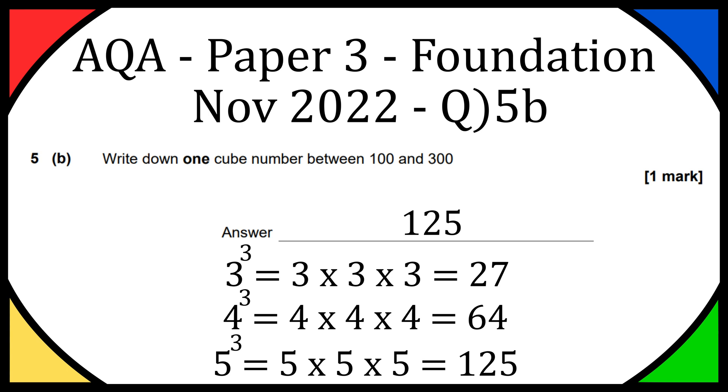You could have also had 6 cubed because that will give you 216, and if you have 7 cubed it will give you 343, but that will be above the 300. So 125 or 216 would have been acceptable answers for this question.